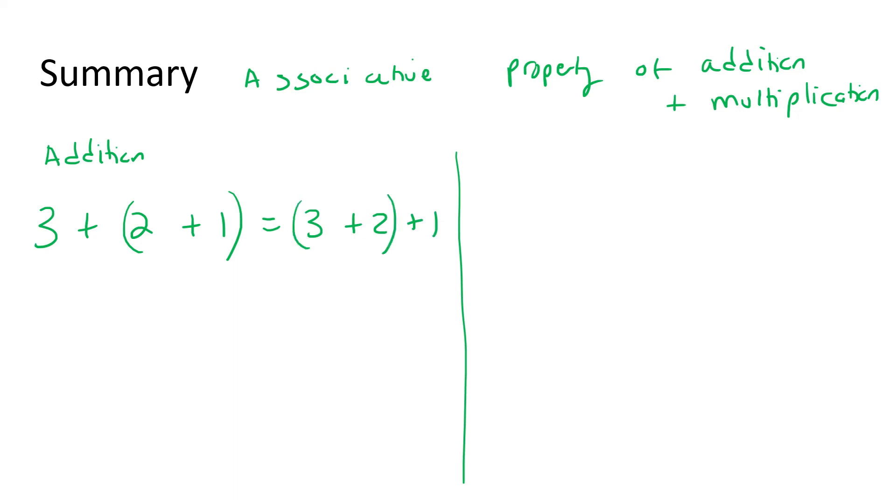And so in this lesson, we learned about the associative property of addition and multiplication. What we said for addition is that if you take a number like 3 plus 2 plus 1, and you put brackets over there for example, that'll be the same as if you say 3 plus 2 plus 1, but then you put the brackets over there. You see how we did not move the numbers. All that we did was we moved the bracket. And then for multiplication, we said 3 multiply by 2 multiply by 1, that'll be exactly the same as 3 multiply by 2 multiply by 1, but if you put the brackets over there. So once again, we are only moving the bracket. We're not moving the numbers.